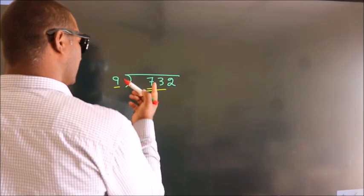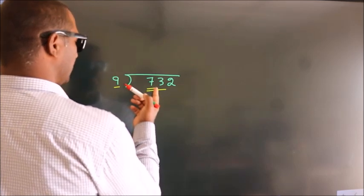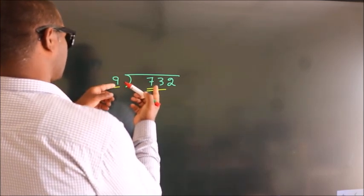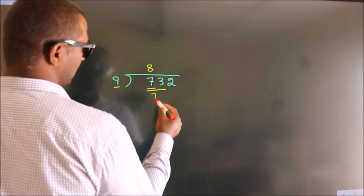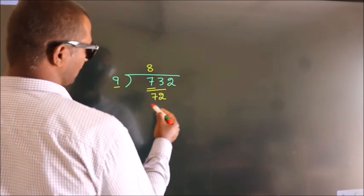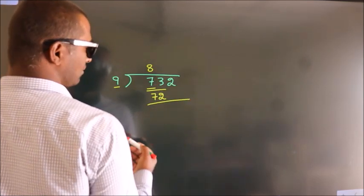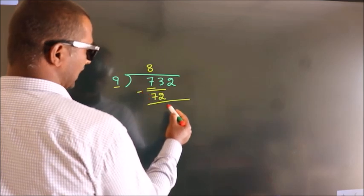73. A number close to 73 in the 9 table is 9×8, which is 72. Now we should subtract. We get 1.